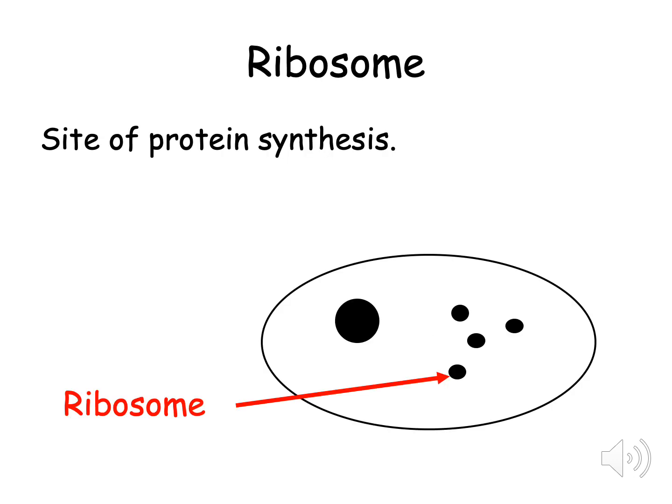The first new structure is called a ribosome. The main function of ribosomes is to make all the proteins within the cell. It is the site of protein synthesis. Ribosomes are usually represented by small black dots in cell diagrams.